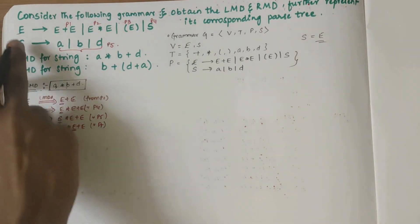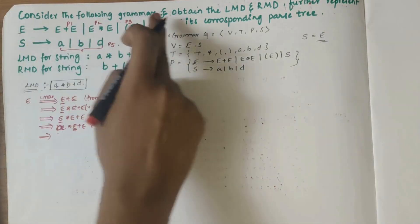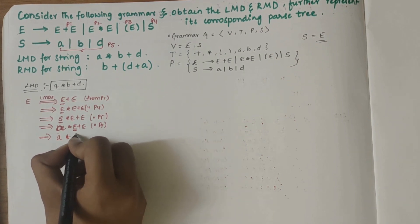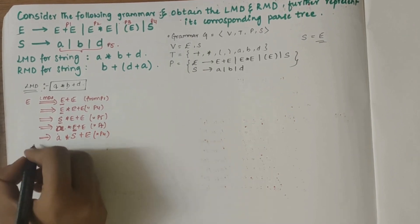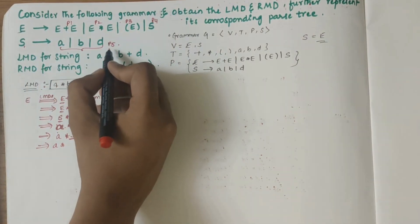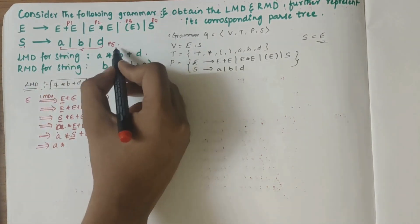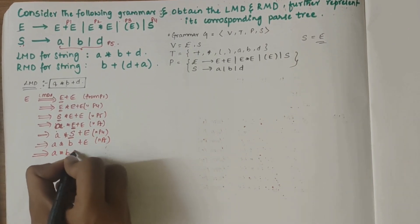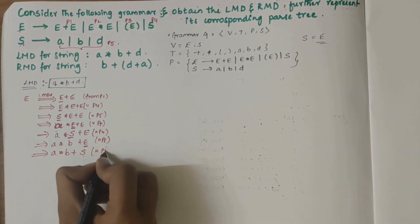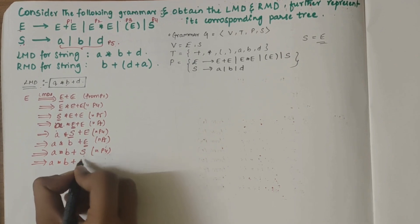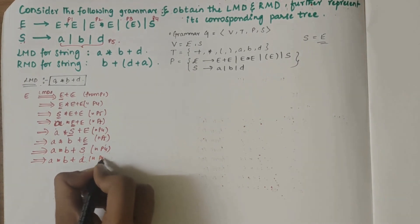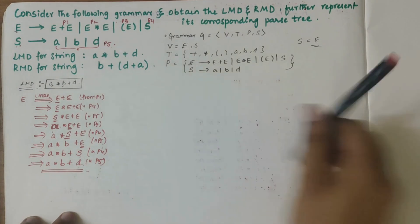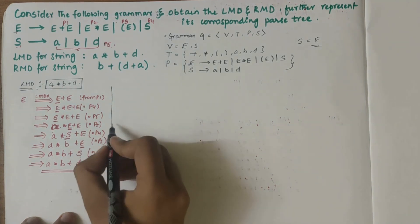Now the E after star needs to be replaced. We write S there from P4, giving A star S plus E. Then S derives B from P5, giving A star B plus E. Next, E derives S from P4, giving A star B plus S. Finally, S derives D from P5, giving A star B plus D. We have obtained LMD1.